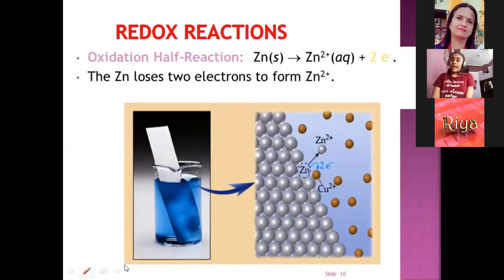Oxidation half reaction. The reaction is Zn gives Zn 2 plus plus 2 electrons. As we can see in the figure, the Zn loses 2 electrons to form Zn 2 plus.